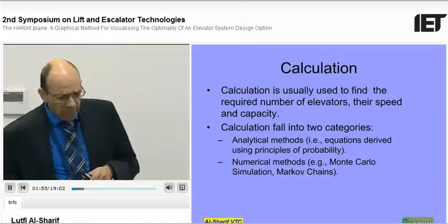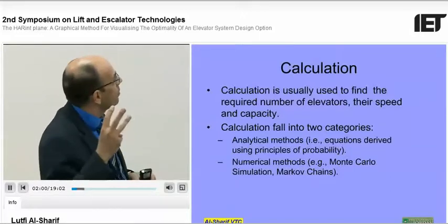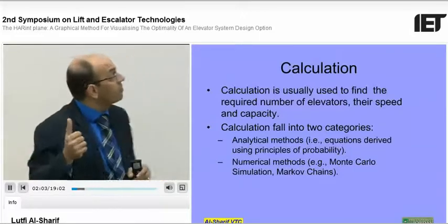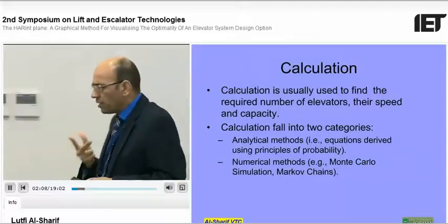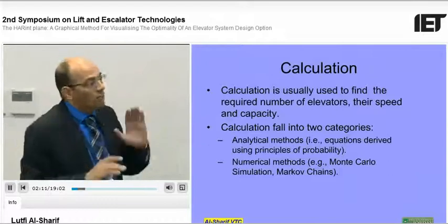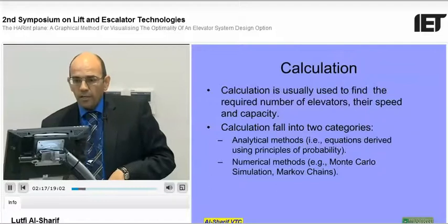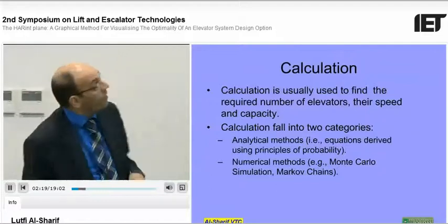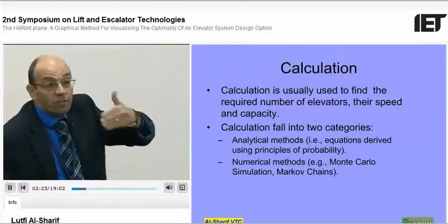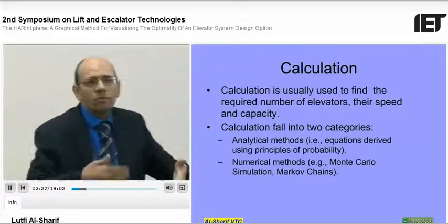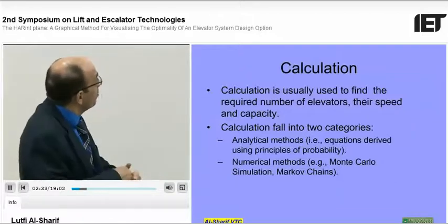Calculation: we have an equation, or a method, by which there are three numbers we want to come up with. How many elevators L, how fast V, and what their capacity is. If we come up with these three numbers — plus zoning — we've got a design. Calculation falls into two categories: the analytical method, where we have an equation derived using principles of probability. Rory talked about that today, and it gets very difficult at an advanced stage. But we can have an equation.